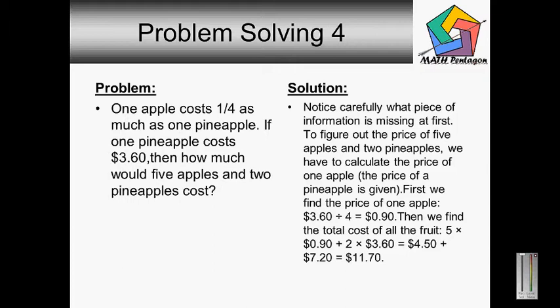Three dollars and sixty cents divided by four, and that gives you ninety cents. Then we find the total cost of all the fruit. Five times ninety cents plus two times three dollars and sixty cents, and that gives you four dollars and fifty cents plus seven dollars and twenty cents, and that makes it equal to eleven dollars and seventy cents as your final answer.